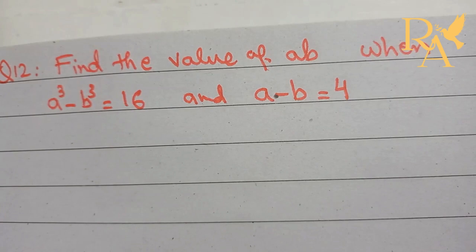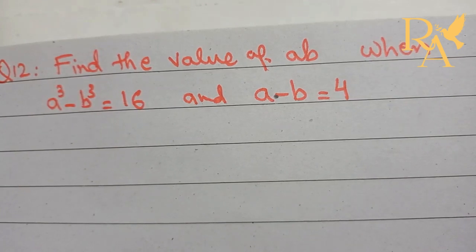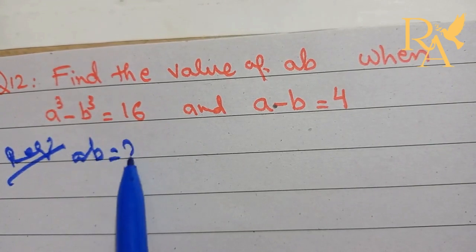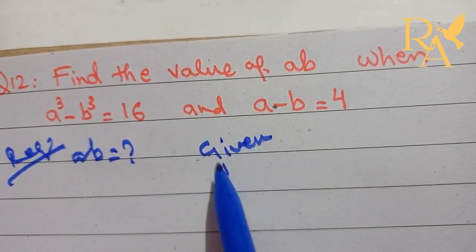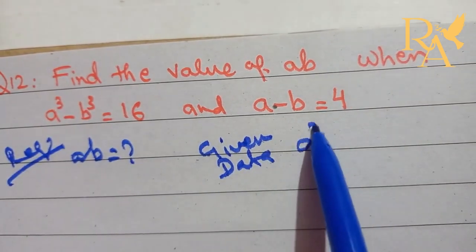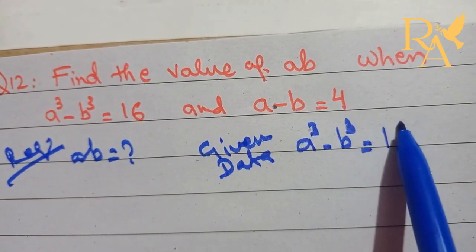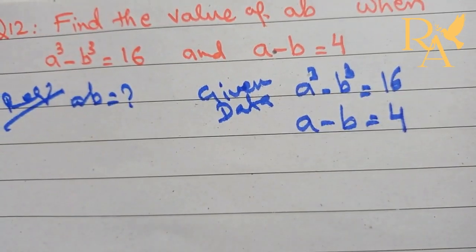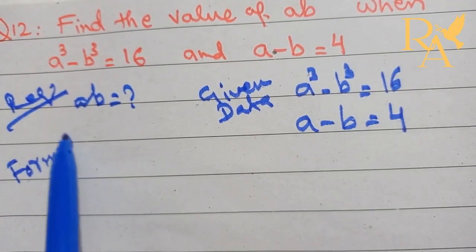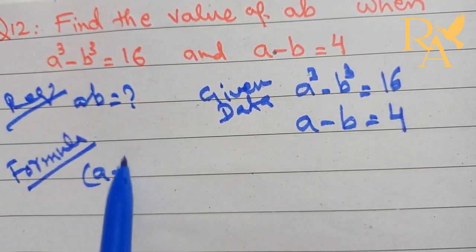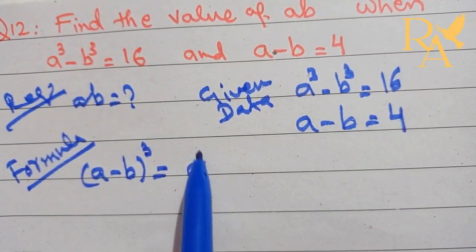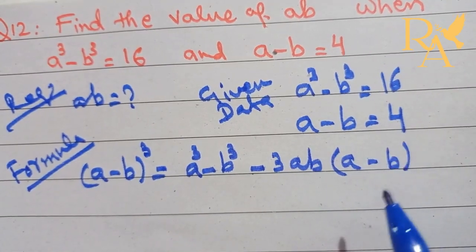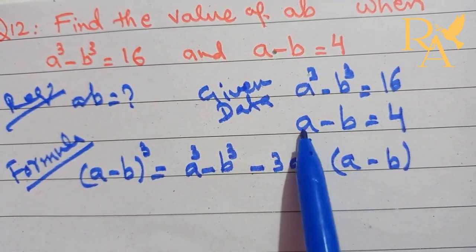Question number 12. In this question, the value of AB is required. The given data is: A cube minus B cube is equal to 16, and A minus B is equal to 4. Now by using the formula, A minus B whole cube is equal to A cube minus B cube minus 3AB and A minus B.